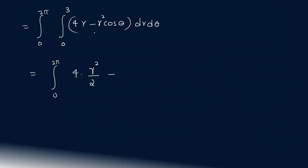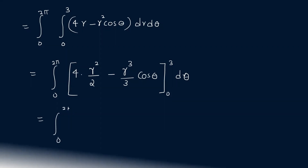Integrating with respect to r: 4r integrates to r² by 2 times 2, giving 2r², and r² cosθ integrates to r³ by 3 cosθ. Evaluating from 0 to 3 gives 2r² minus (r³/3) cosθ evaluated at 0 to 3.